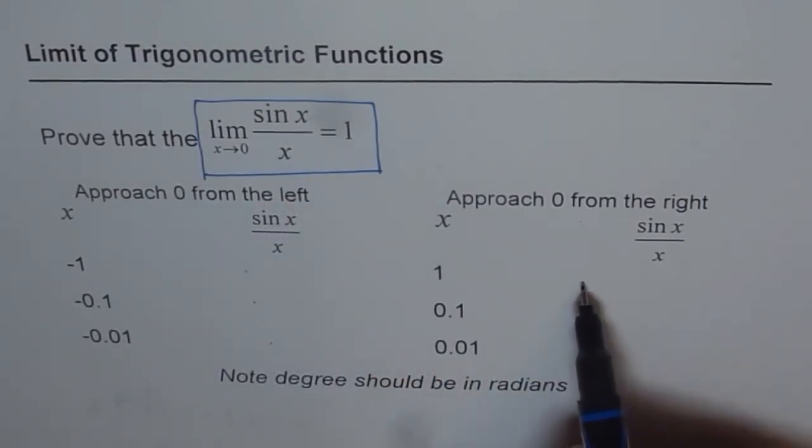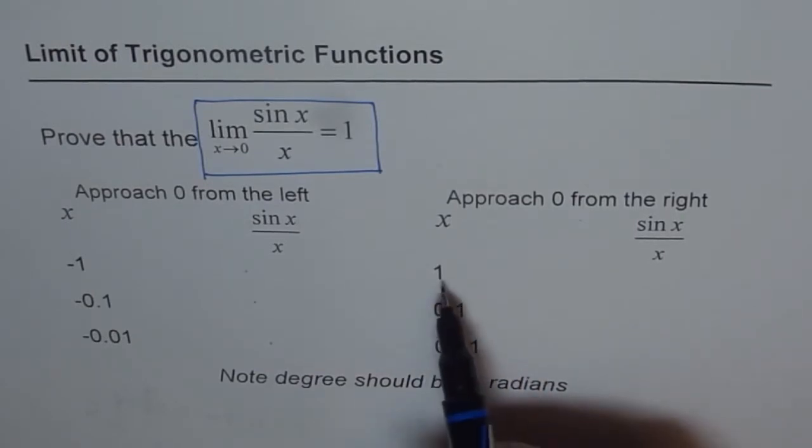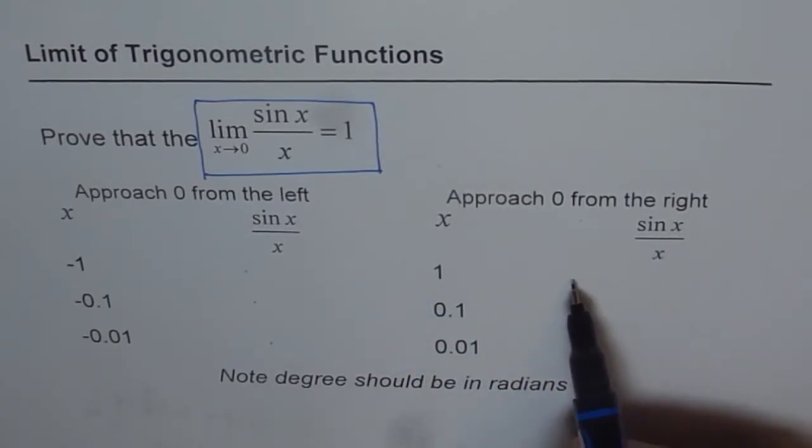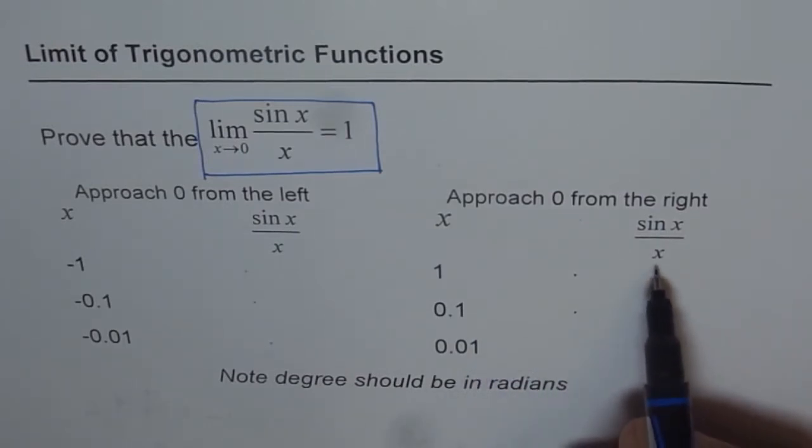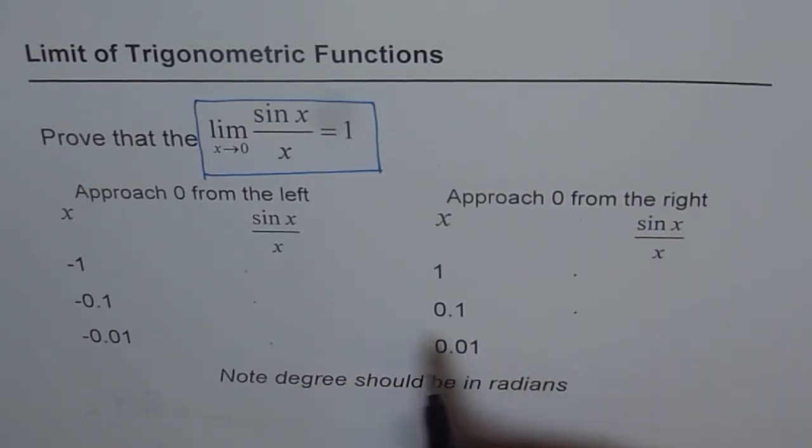Similarly, complete this table. Substitute 1 for x and see what you get. Then 0.1 and then 0.01. So you are approaching 0 from the right side. Both these values will be very close to 1. And that is how we know that limit of sin x over x when x approaches 0 is 1.